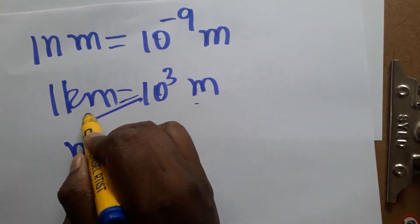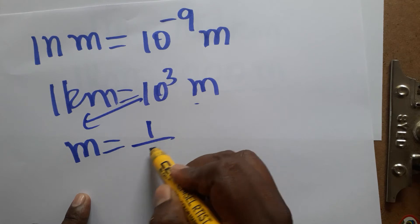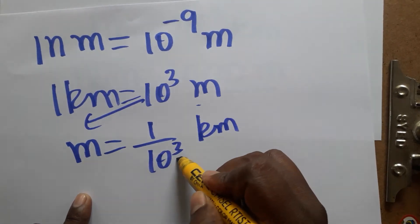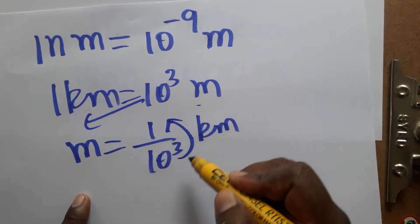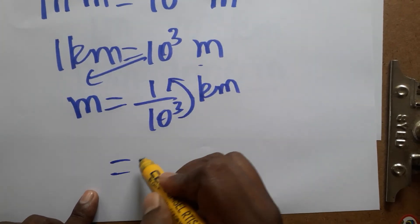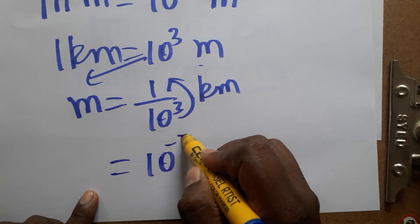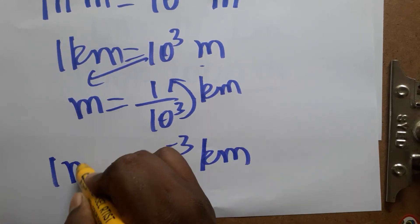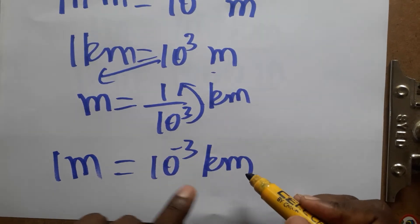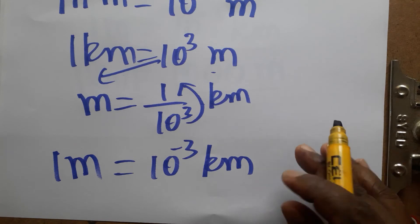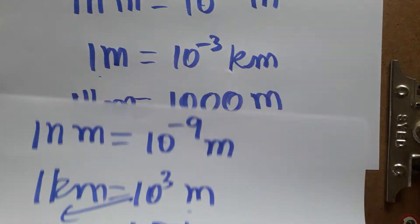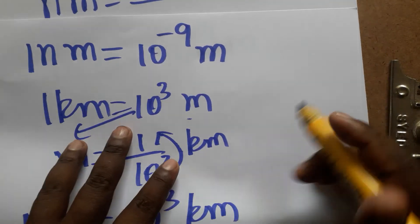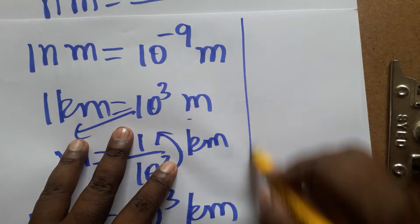For the meter-to-kilometer conversion: one meter equals 10 power 3 in the denominator, which gives us 10 power minus 3 kilometers. So one meter is equal to 10 power minus 3 kilometers.